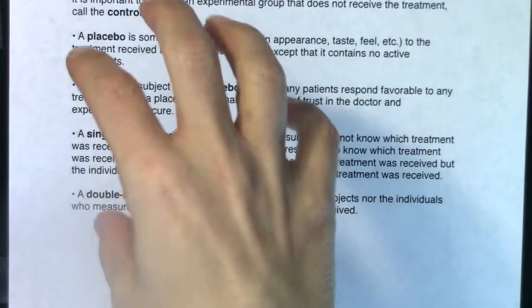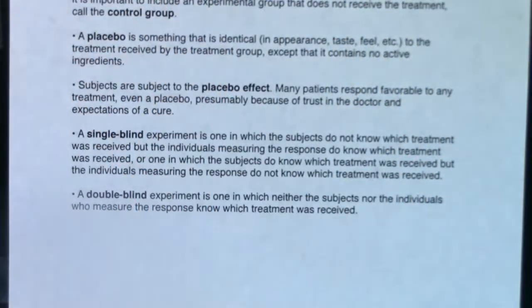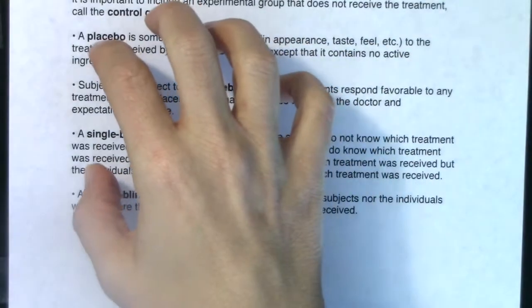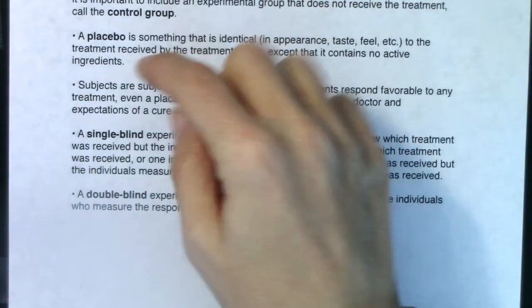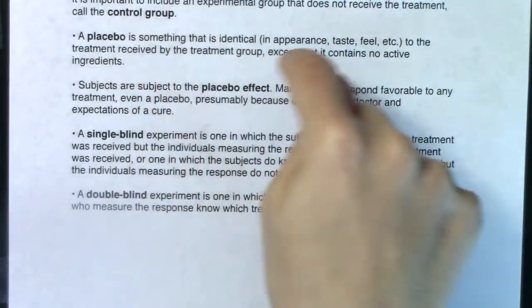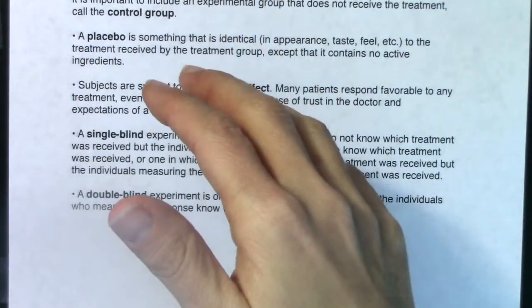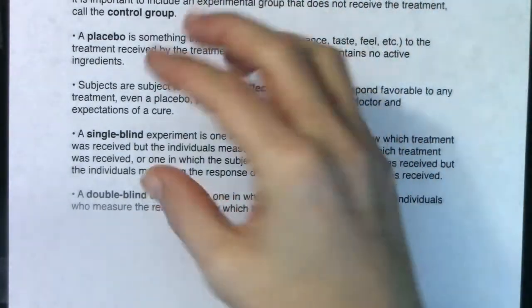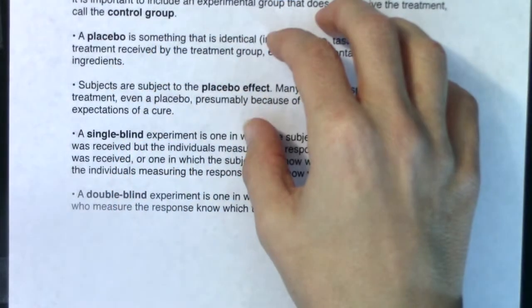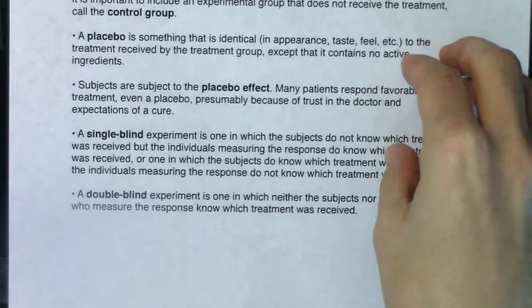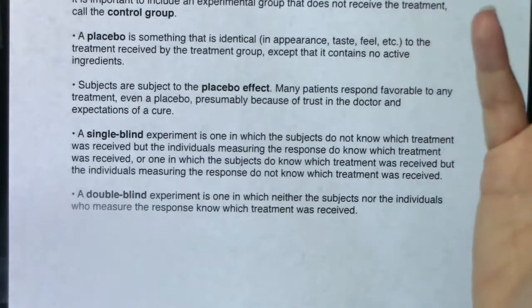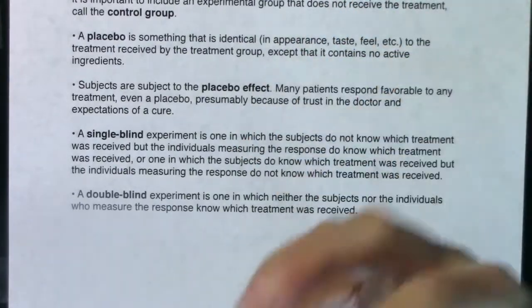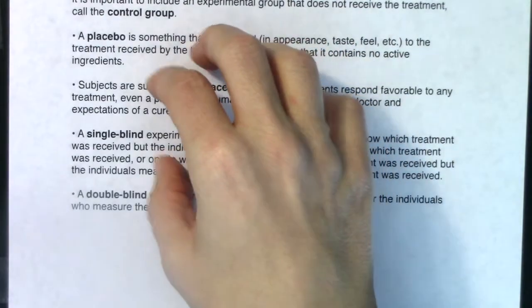For example, with flu shots — there were two versions: a shot or a nasal spray. If I were the subject of that experiment, I would know if I was getting a shot or a nasal spray. But let's say flu season passes and I go check in with the person running the experiment — if it's a single blind experiment, while I would know which treatment I received, the person evaluating me would not. I'd tell them yes or no I got the flu, but they wouldn't know which treatment I had received.